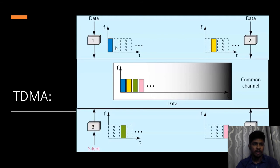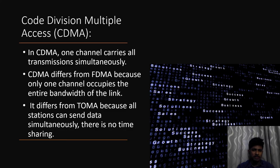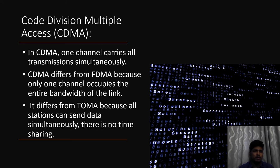Now let's go into the final channelization protocol — CDMA, Code Division Multiple Access. In CDMA, one channel carries all transmissions simultaneously. CDMA differs from FDMA because only one channel occupies the entire bandwidth of the link. It differs from TDMA because all stations can send data simultaneously — there is no time sharing in CDMA.